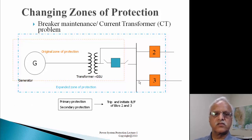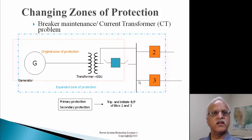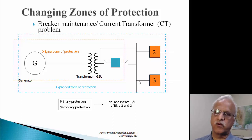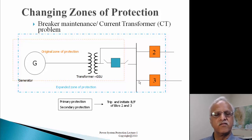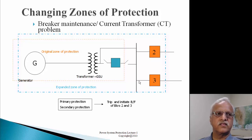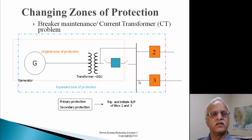We also need to initiate the breaker failure relay. The breaker failure relay monitors whether the breaker opened when commanded to trip. The primary protection relay sends an open command to the breaker and also notifies the breaker failure relay. The breaker failure relay starts a timer - breakers are supposed to operate in two to three or five cycles. If the breaker has not operated within that time plus a margin of a few more cycles, it is declared a failed breaker and the adjacent sources are opened.